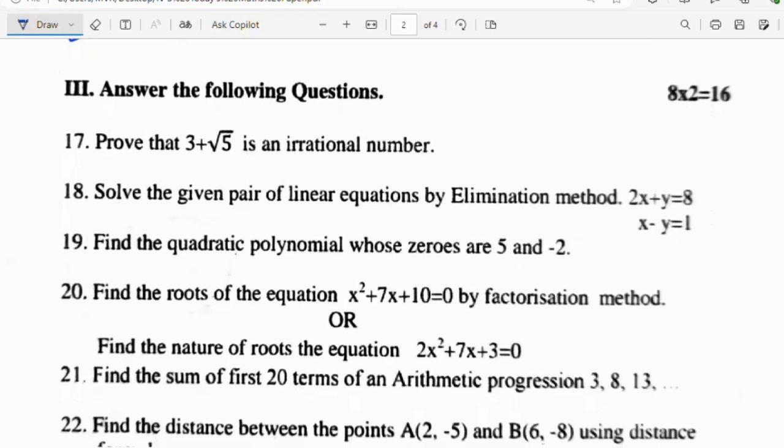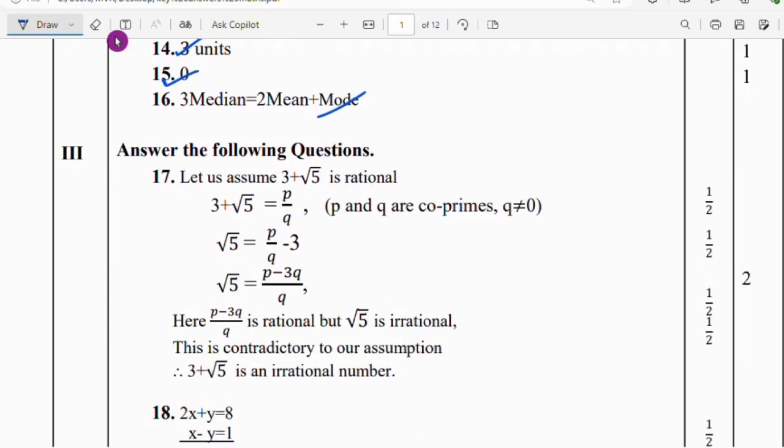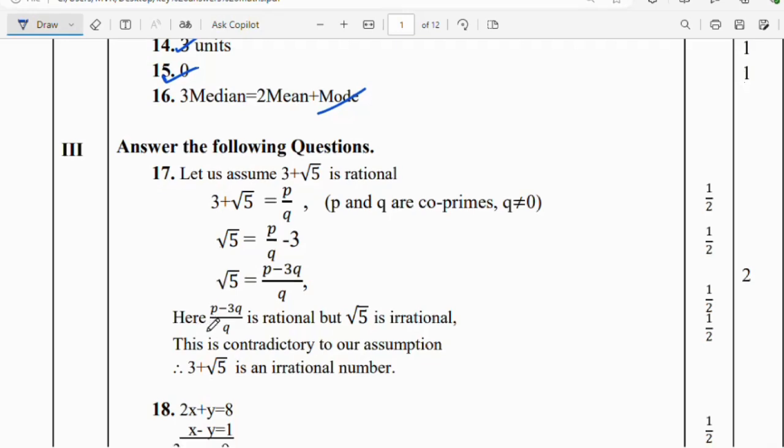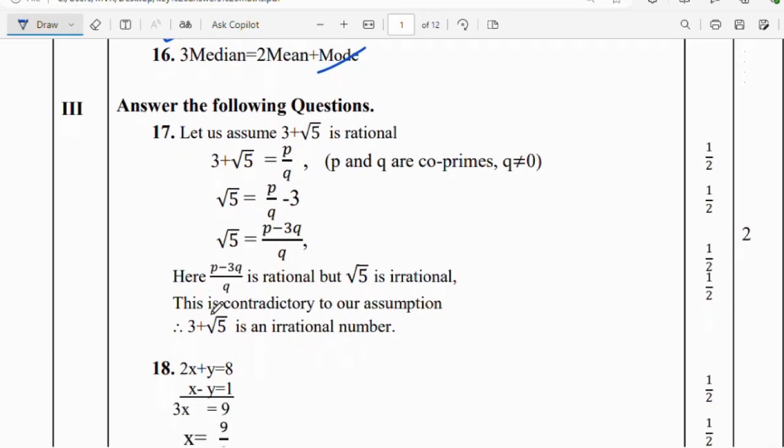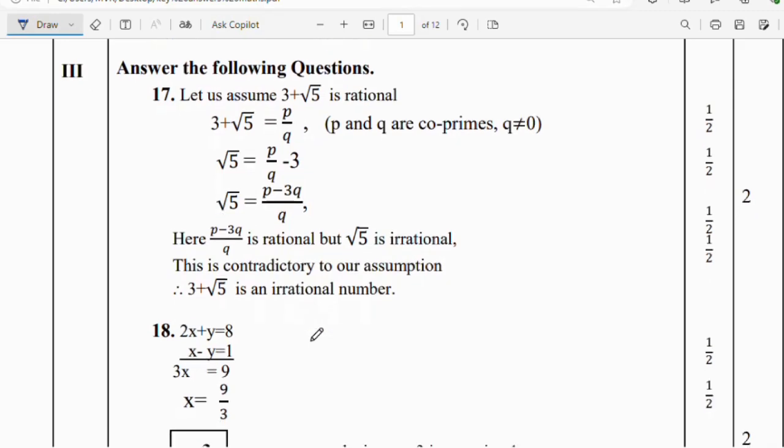Third main question: Answer the following questions. Question 17: Prove that 3 plus root 5 is an irrational number. First let us assume 3 plus √5 is a rational number. So 3 + √5 = p/q where p and q are co-primes, q not equal to 0. If you take 3 to the left side, √5 = p/q minus 3 = (p - 3q)/q. Here (p - 3q)/q is rational but √5 is irrational. This is contradictory to our assumption. Therefore, 3 plus √5 is an irrational number.